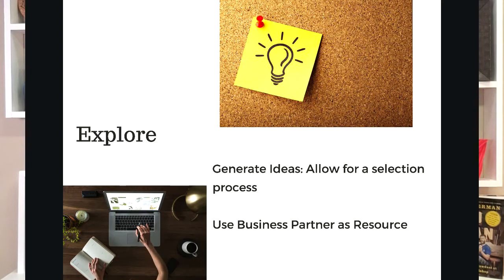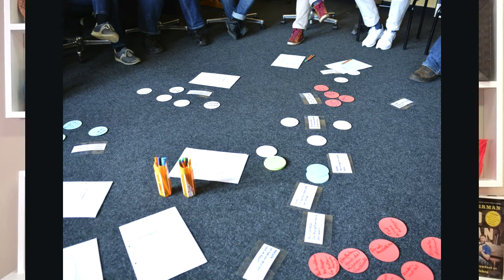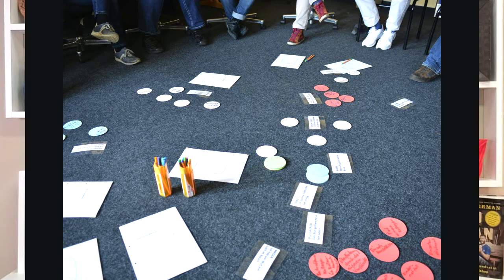In the second phase of solving the problem, students explore the curriculum through generating solutions, researching, using content area knowledge, and using the business partner as a resource. For my classroom, I find doing a whole class brainstorm about possible solutions right after the business partner's visit helps to get the energy going. I have the students write down as many possible solutions as they can think of, and we throw them all up on the whiteboard so that everyone's creativity can be inspired.